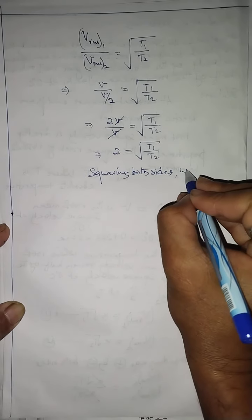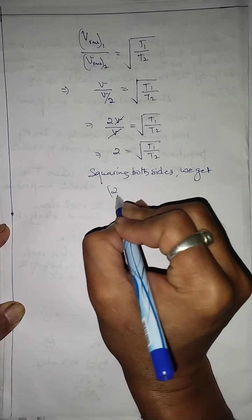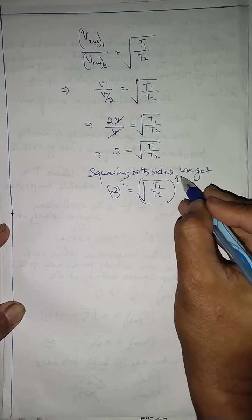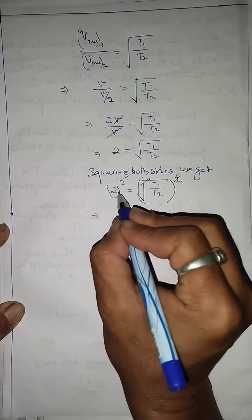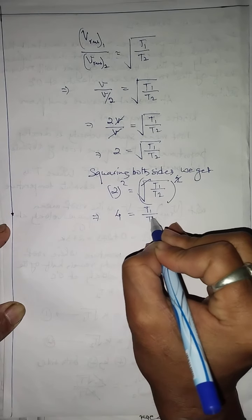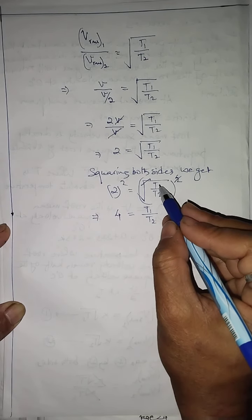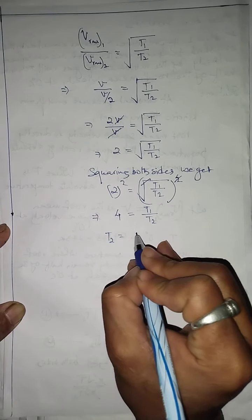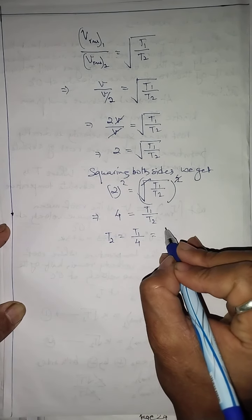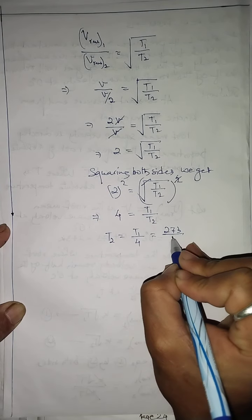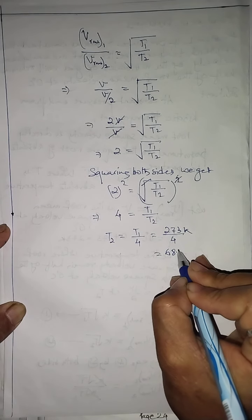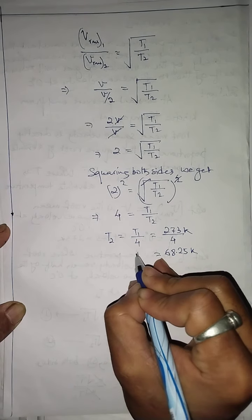Squaring both sides: 2² = (√(T1/T2))², so the square and square root cancel, giving 4 = T1/T2. Therefore T2 = T1/4 = 273/4, which equals approximately 68.25 Kelvin. So T2 = 68.25 K.